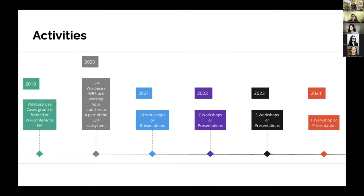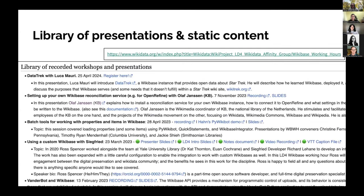This timeline gives you a sense of the group's activities. From the first year, there were 10 workshops or presentations, and that declined slowly over time until there was just one workshop or presentation this year. That library of content still lives on our Wiki page, and I'll share it through the slides — it's a great artifact from this group.